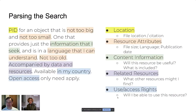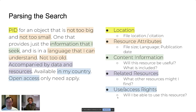One of the key bridges in enabling computer searches and parsing to help us find those resources is by classifying some of the things we're trying to find. For example, we might need a location — where do we find that object? Once we know that the object exists, how do we find it? That might be a PID. Other things are resource attributes, like the file size, the language, the publication date — so it's not too big, not too small, a language I can understand, not too old.